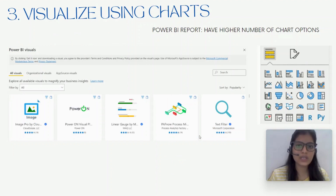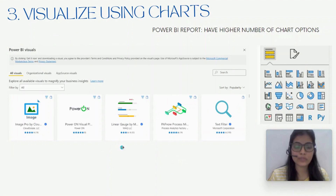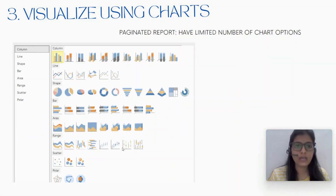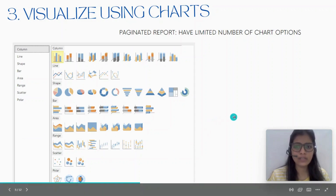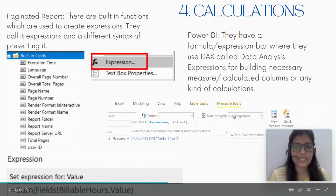The third difference is visualizing using charts. In a Power BI report you have these default visuals and you can even import different types of visuals from the Microsoft marketplace, but in the case of a paginated report you have a fixed set of chart options.